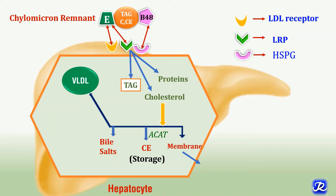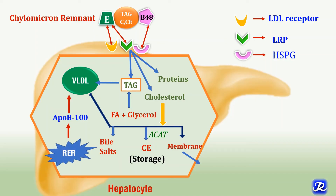The triacylglycerol acquired from chylomicron remnants by hepatocytes, along with triacylglycerol synthesized in hepatocytes from fatty acids and glycerol in the well-fed condition, is incorporated into VLDL. VLDL requires the important apoprotein ApoB100, synthesized in the rough endoplasmic reticulum. Together with ApoB100, TAG from chylomicron remnants and hepatic synthesis, and some cholesterol, VLDL is formed and released into circulation to carry endogenous triacylglycerol from the liver to peripheral tissues.